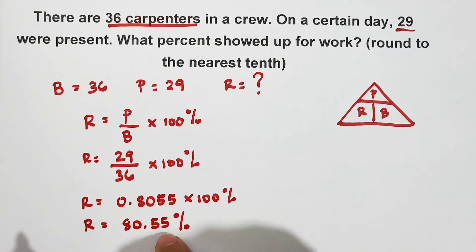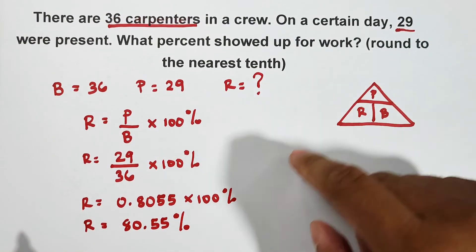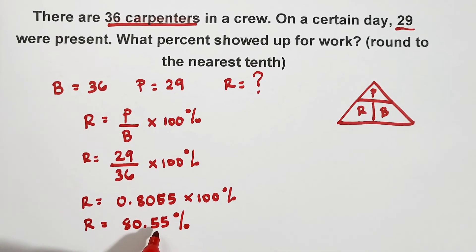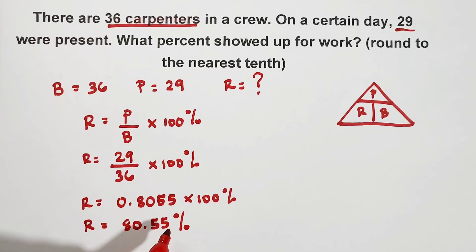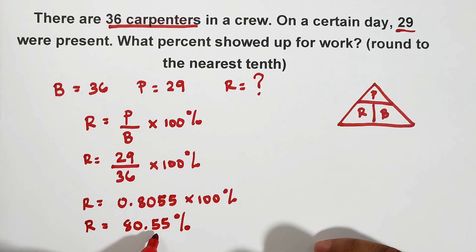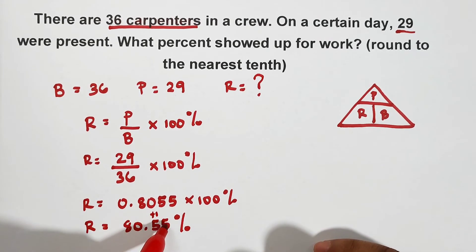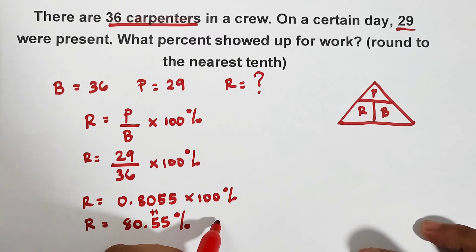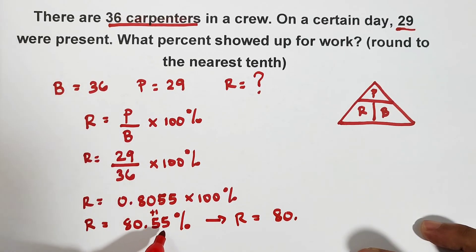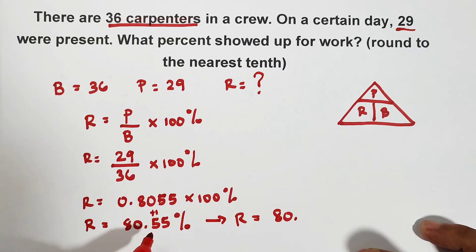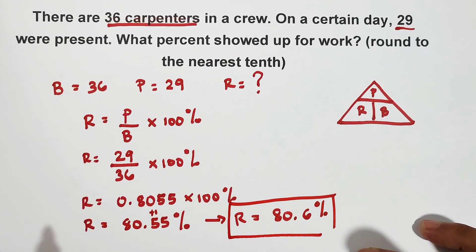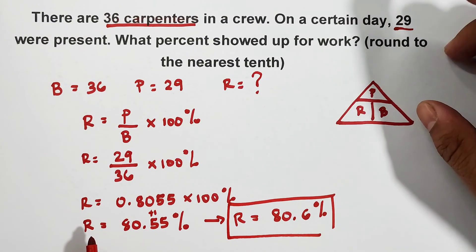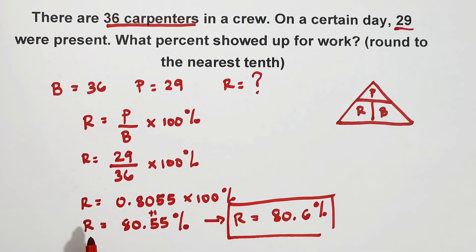But this is correct, 80.55%. But in our problem, round to the nearest tenth. This is our tenths digit. Meaning, this is what we consider. The number next to the tenths digit is five. When we round off, what happens is we add one to this digit. This loses the five and becomes zero. Meaning, our final answer for the value of rate: R is equal to 80 - since five is next to it, when we round it off, we add one to the tenths digit - so that is six. So what we have now is 80.6%. This is the percentage of 29 people who are present on a certain day in the group of carpenters.